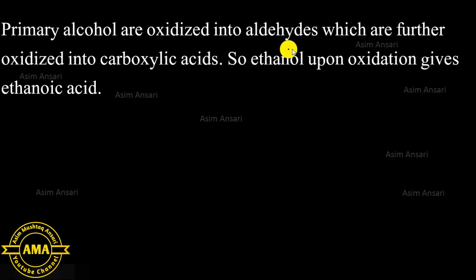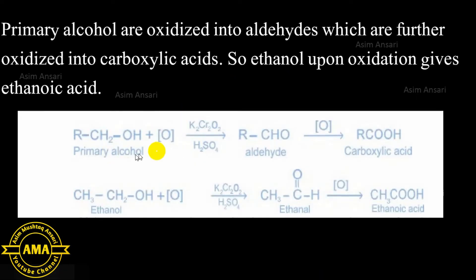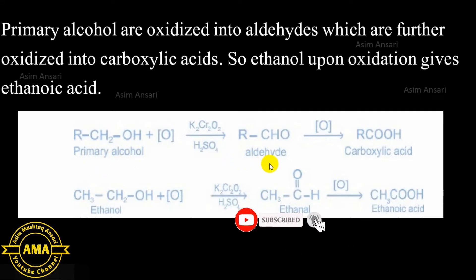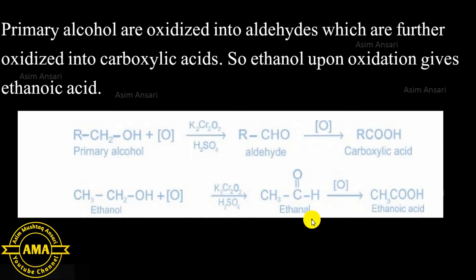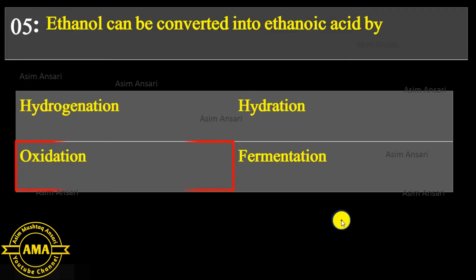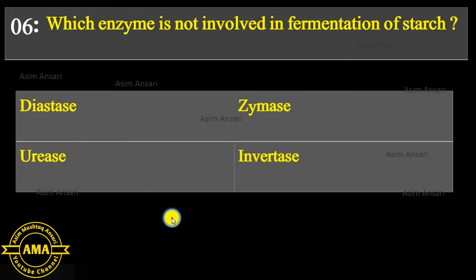Next MCQ: Ethanol can be converted into ethanoic acid by hydrogenation, hydration, oxidation, or fermentation? Primary alcohols are oxidized into aldehydes, which are further oxidized into carboxylic acids. As shown in the diagram, ethanol upon oxidation gives ethanal, and ethanal is further oxidized to ethanoic acid. The exact answer is oxidation.